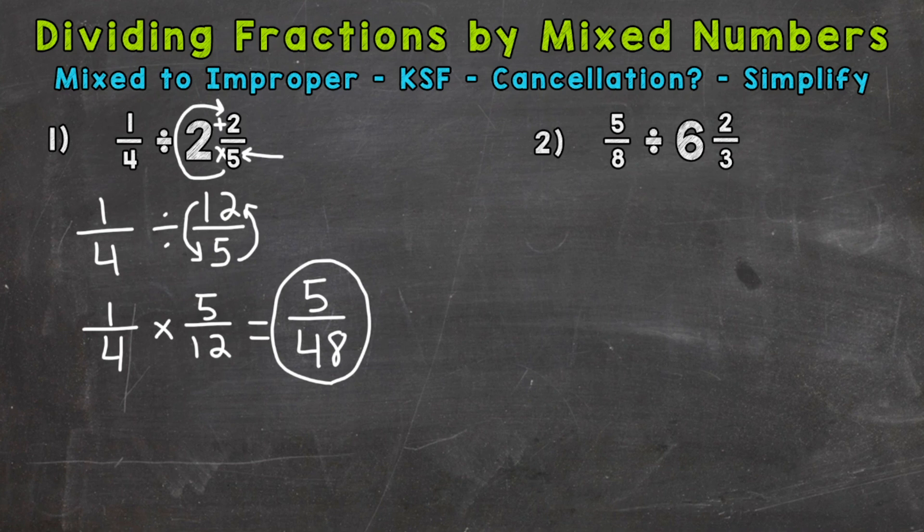Let's move on to number two, where we have five-eighths divided by six and two-thirds. First thing we need to do is rewrite the problem with any mixed numbers converted to improper fractions. So five-eighths we keep the same. Divided by, start at the bottom, work our way up, multiply and then add. Three times six is eighteen, plus two is twenty. Denominator of three stays the same. Now we're all set up and can go through our dividing fractions steps.